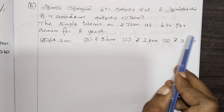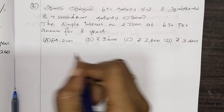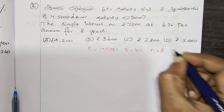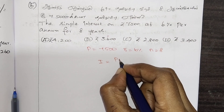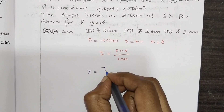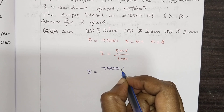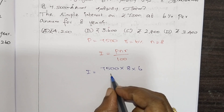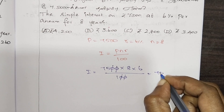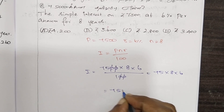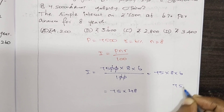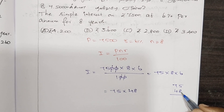The data is at 6% per annum for 8 years. Rate of interest is R, N is 8. Simple interest: I equals PNR by 100. I equals P into 8 into R divided by 100. We need to find the value of R. With 8 into 5 equal to 40.